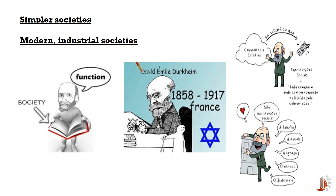In simpler societies, characterized by mechanical solidarity, individuals perform similar tasks and share common values and norms. This uniformity nurtures social cohesion and solidarity, as everyone contributes to the collective well-being based on shared understandings. As societies progress and become more complex, they experience a shift toward organic solidarity.